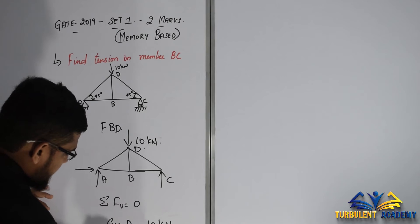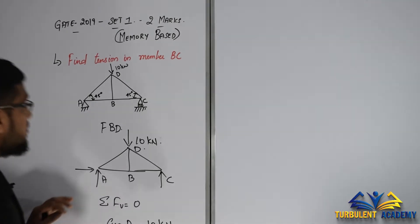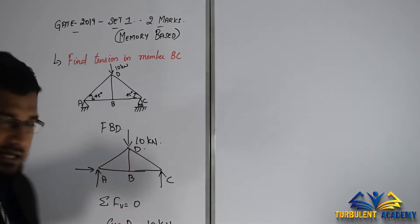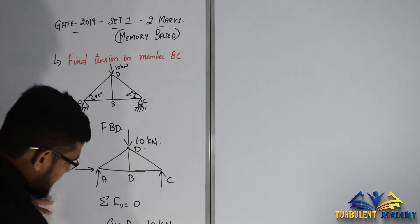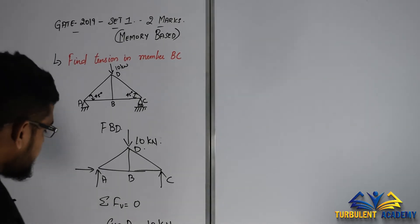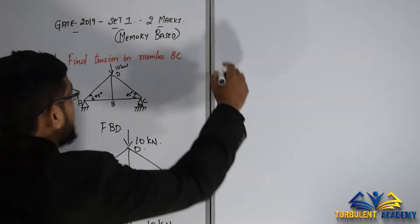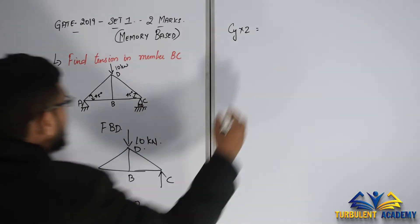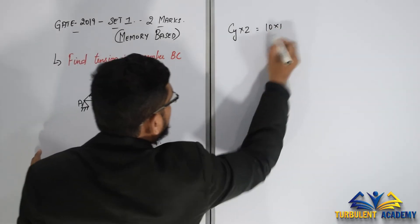Summation of moment about A equal to zero. As they are given in the statement, since 45 degrees and 45 degrees, lengths are going to be equal. I am going to take it to be as 1. C_Y into 2 is going to be - I'll just have it over here - so C_Y into 2 is going to be 10 into 1. So C_Y is going to be 5.